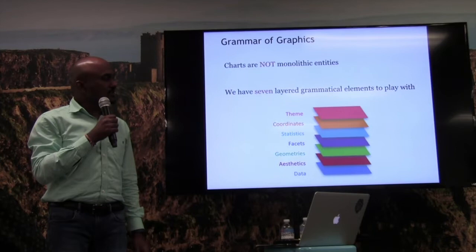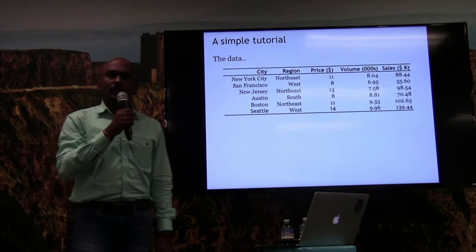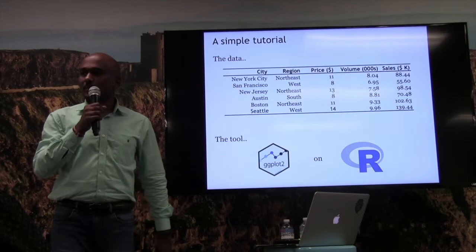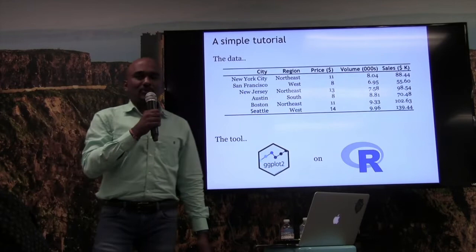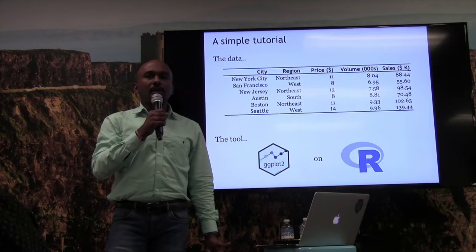We'll use some sample data for this tutorial. It has sales from six cities across three regions and shows the price, volume numbers, and revenue. For this we will be using R and ggplot2 as the package. The reason I chose ggplot2 is that it is fairly powerful, open source, and it is built with the grammar of graphics as a foundation — making it the best example to use here.